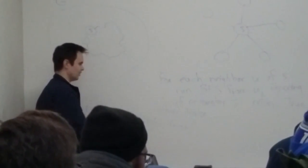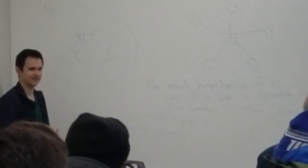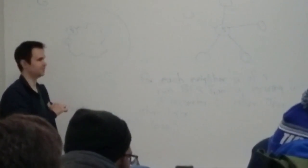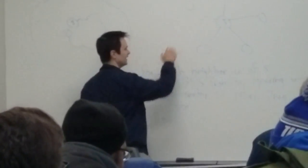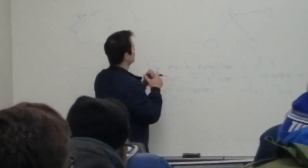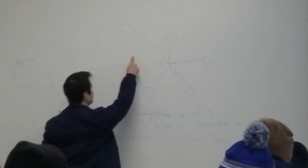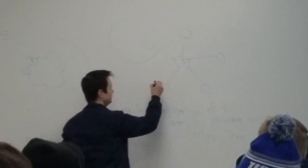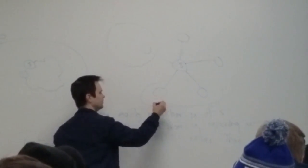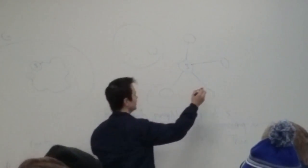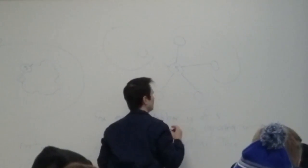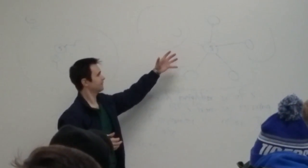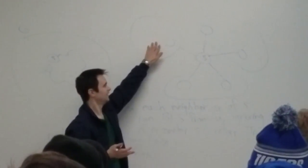Now for this problem, you have this annoying factor of the degree of S. How do you get rid of that? The idea is, if you analyze things carefully, the factor of degree of S will actually disappear. Because if you imagine deleting S from the graph, it's going to split the graph into potentially a bunch of connected components. It may be that from this neighbor of S, you can't reach any of the other neighbors of S. The problem of finding a cycle containing S is really just whether one of these components has two neighbors of S.